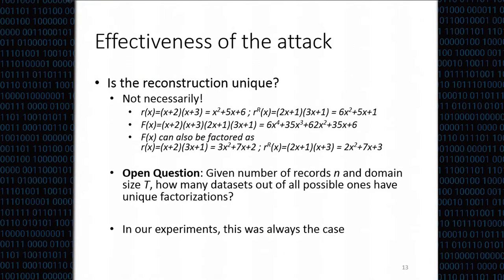The question is whether this reconstruction is always unique. Unfortunately, no—sometimes a dataset results in more than two irreducible factors, which could yield more than one solution. It remains an open question: given the number of records and domain size, how many possible datasets have a unique factorization? We cannot answer this in general, but in our experiments with 1,500 datasets and different index attributes, we always obtained a unique factorization and a unique reconstruction. It seems there are not many datasets that do not have a unique factorization.